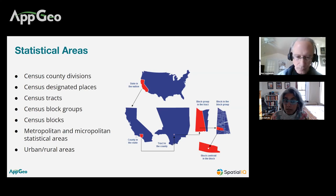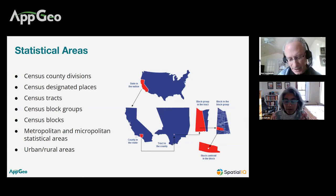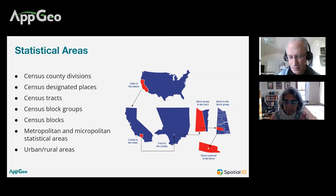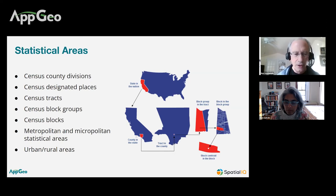As for census blocks, groups, and tracts — census tracts are unique within counties, but census tracts can cover multiple towns or townships. Census tracts can be split within a governmental unit, but they will not be split by county boundaries — only by minor civil division or sub-county areas within the county.